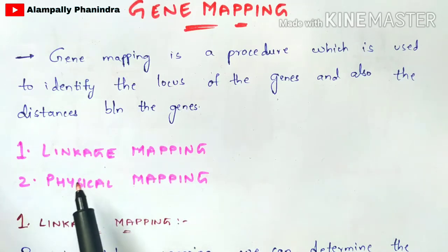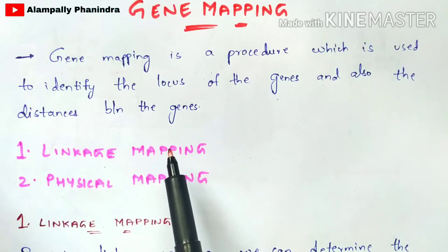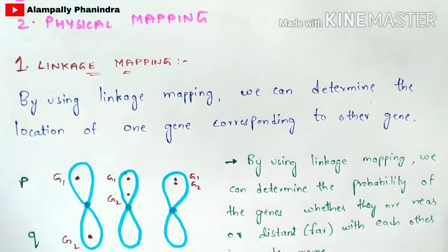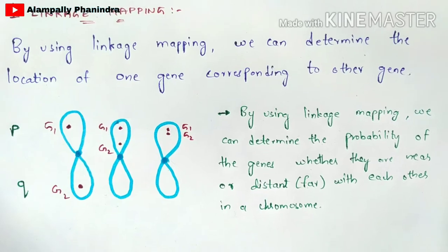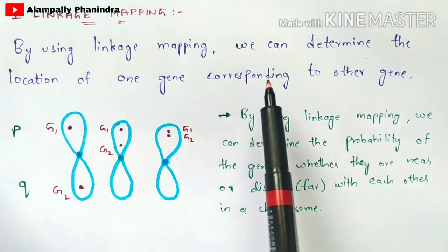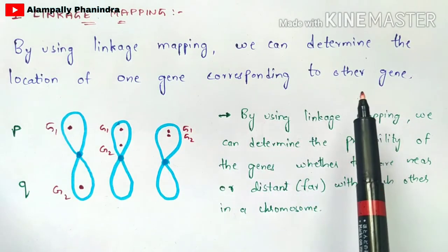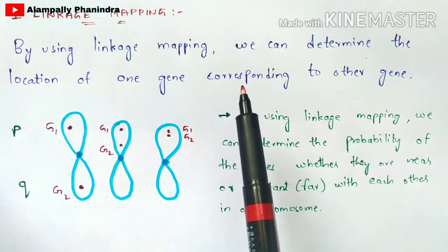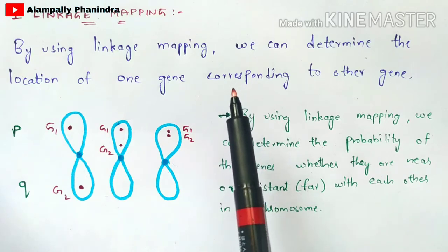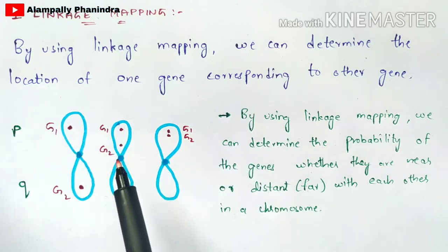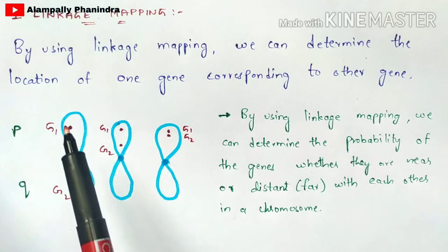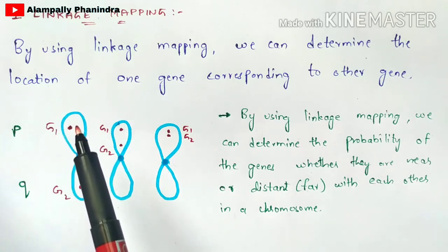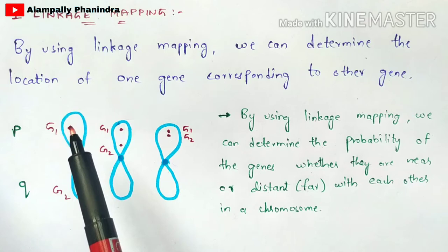The highly used procedure is physical mapping rather than linkage mapping. By using linkage mapping, we can determine the location of the gene corresponding to other genes, but the exact location cannot be determined. For example, if you take a pair of chromosomes and consider two genes, the exact locus cannot be pinpointed using linkage mapping.